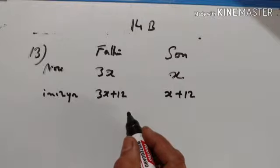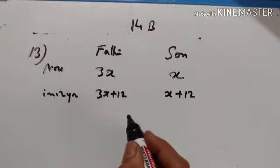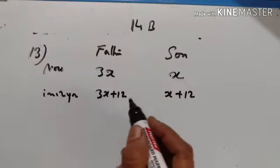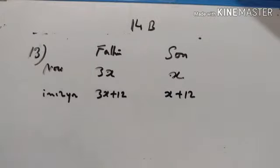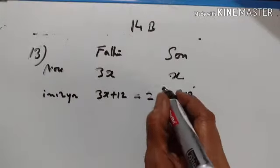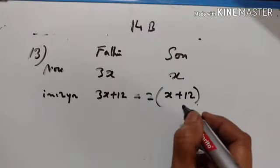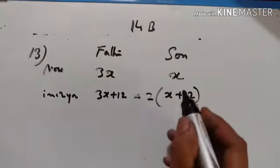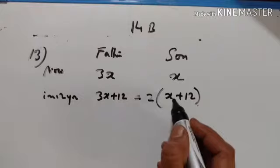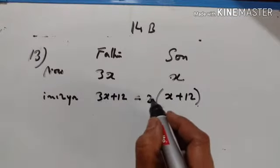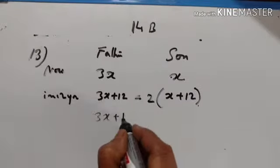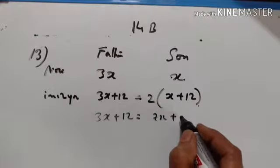If you are 10 years old now, after 12 years you will be 22, that is 10 plus 12. Similarly, if the father is 3x now, after 12 years he will be 3x plus 12 and the son will be x plus 12. In 12 years the man will be twice as old as his son would be. So 3x plus 12 is equal to 2 times x plus 12, giving 3x plus 12 is equal to 2x plus 24.